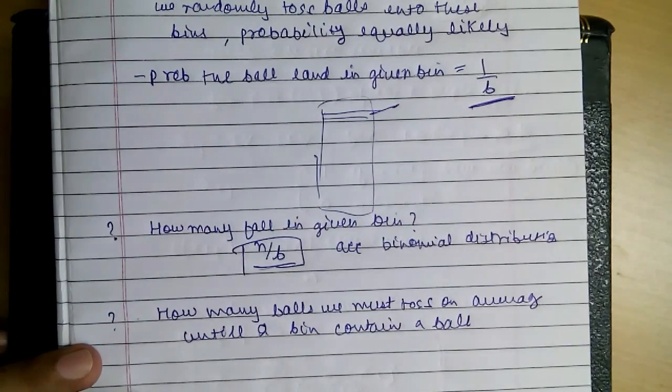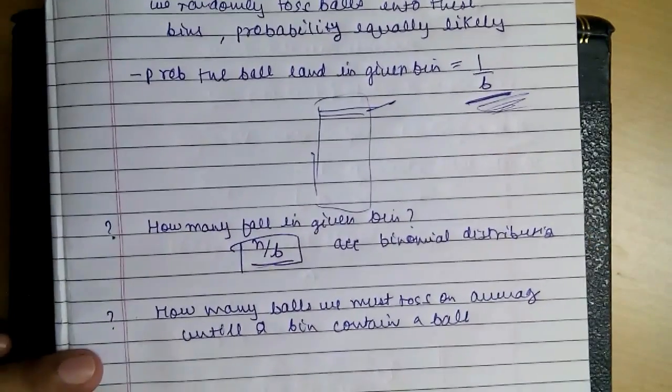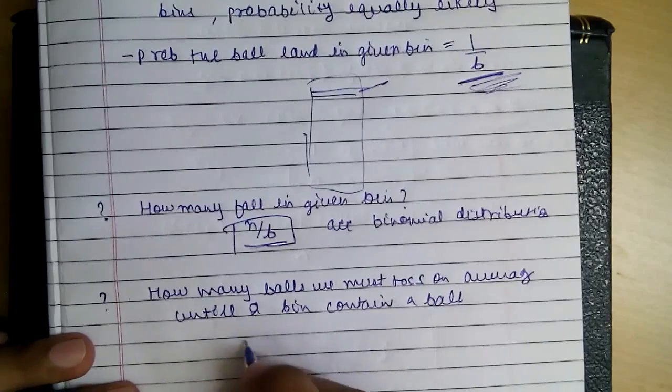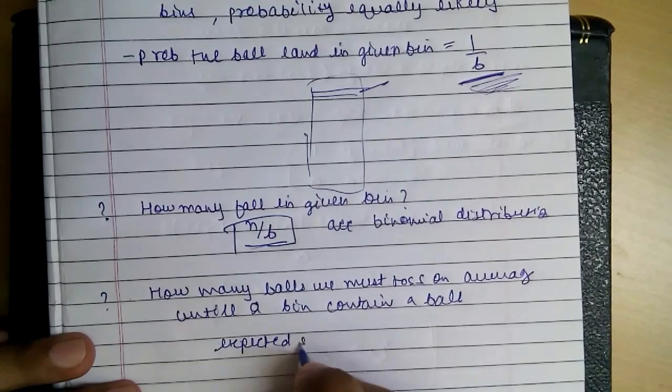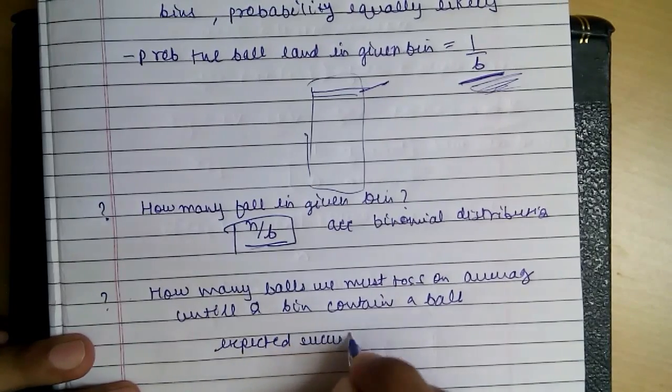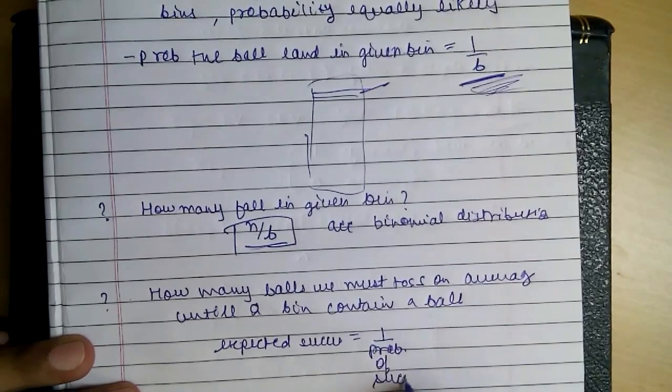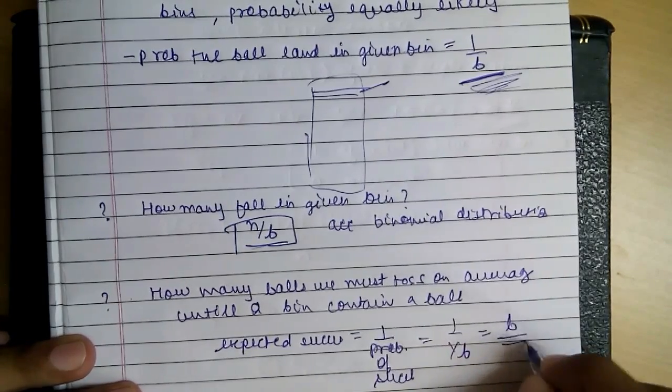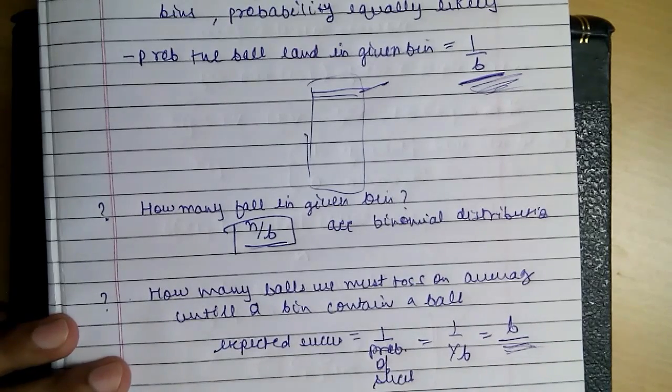So as the probability of success was 1 by B, so for the Bernoulli trials, the expected number of trials equals 1 by probability of success, and it is 1 by 1 by B equals to B. So we must have a bunch of B balls to get a hit in a bin.